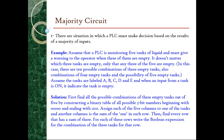Assuming that the inputs of the tanks are labeled A, B, C, D, and E. When an input from a tank is ON, it indicates that the tank is empty. It doesn't matter whether it's A, B, C or B, C, D or any other combinations. To determine the majority inputs of this program, first we need to find all possible combinations of three empty tanks out of five.